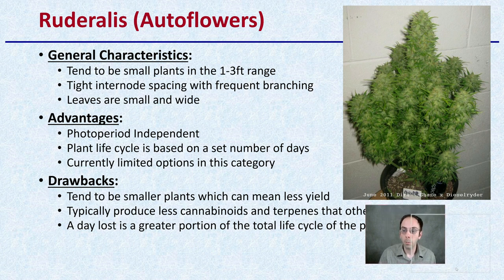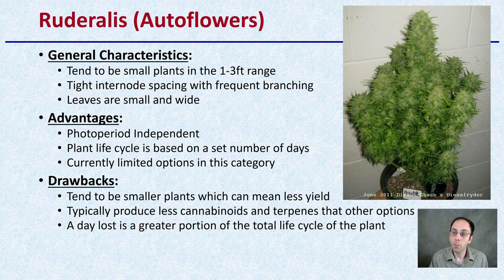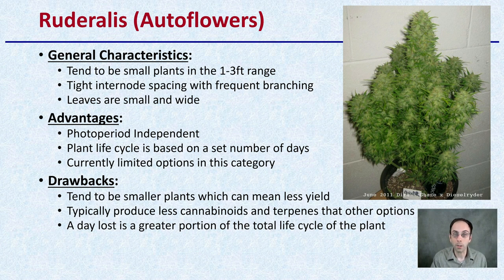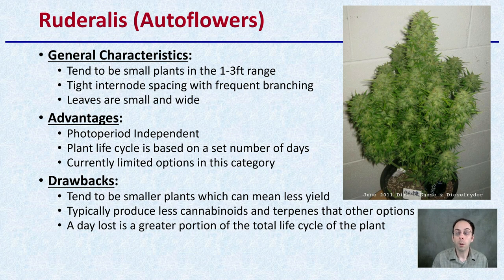Ruderalis are the autoflowers, where things get a little bit more interesting. They tend to be very small plants — only 1 to 3 feet — with tight internode spacing and frequent branching with small, wide leaves. The advantage is they are photoperiod-independent, meaning they will flower based on a set number of days, not on the duration of light they're exposed to. Currently, there are some limited options in this category, but where those options exist, it can be quite advantageous. The drawbacks are that they tend to produce less yield, fewer cannabinoids and terpenes than other options, and a day lost is a greater portion of the total life cycle because — unlike photoperiod-dependent plants — you can't make that up by adjusting when you flip them to flower. These are predetermined based on days old.